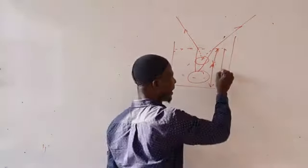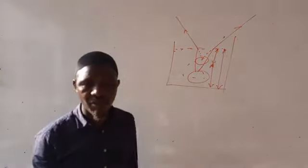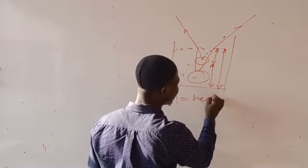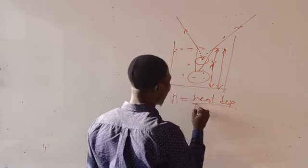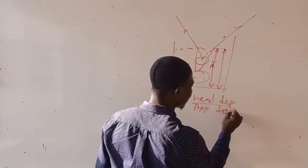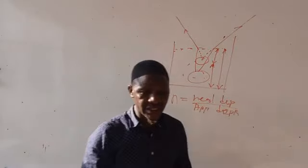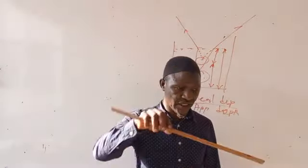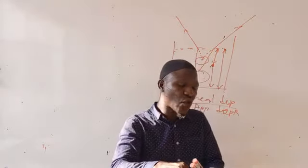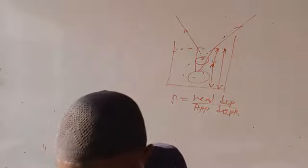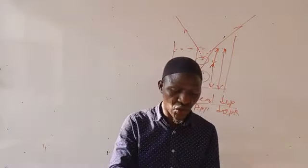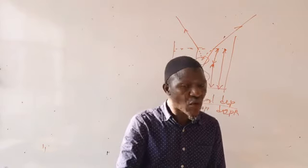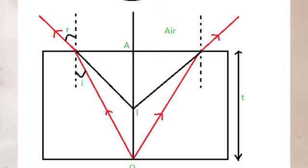The true depth of the container gives us another formula: refractive index equals real depth over apparent depth. Another illustration: if you dip a straight pencil slightly into water in a cup, the pencil will appear bent. Similarly, if you place a prism on a coin on a table and look at the coin through the prism, the coin will appear to come up — as a result of refraction.